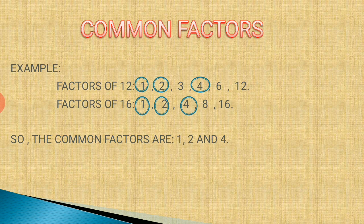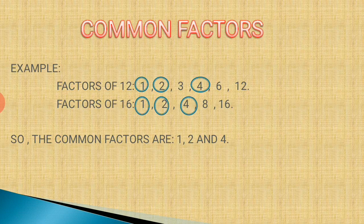Next is common factors. Let's understand this with an example. The factors of 12 are 1, 2, 3, 4, 6, and 12. The factors of 16 are 1, 2, 4, 8, and 16. So the common factors are 1, 2, and 4.